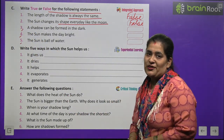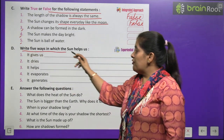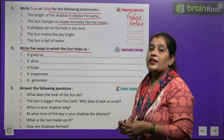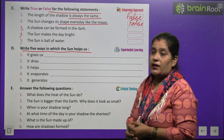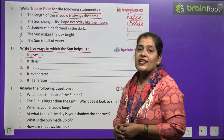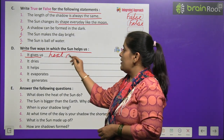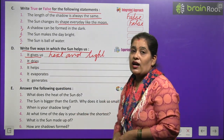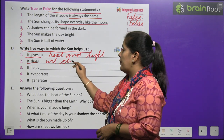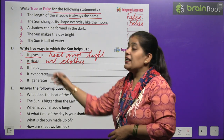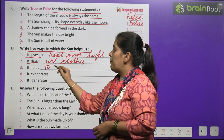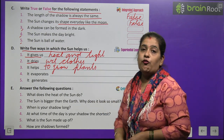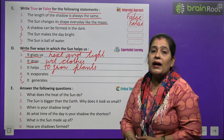Exercise D — write 5 ways in which the sun helps us. Number 1: It gives us heat and light. Number 2: It dries the wet cloth. Number 3: It helps to grow plants. Numbers 4 and 5 you will do by yourself.